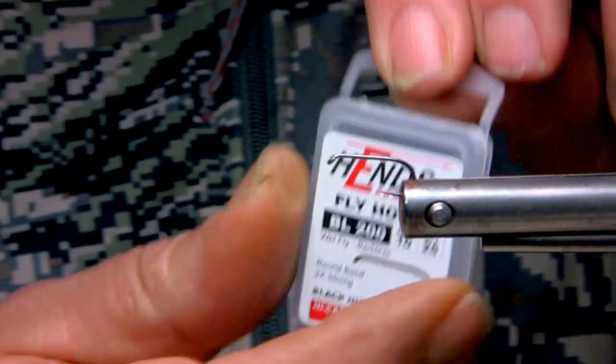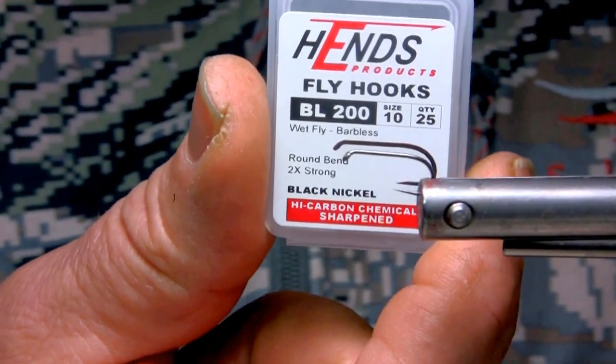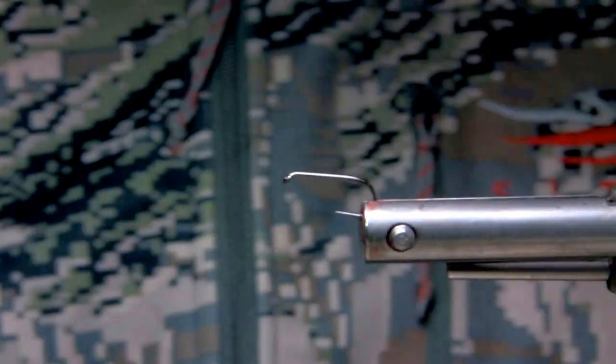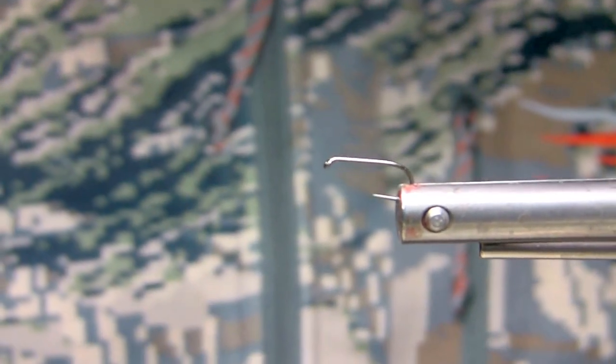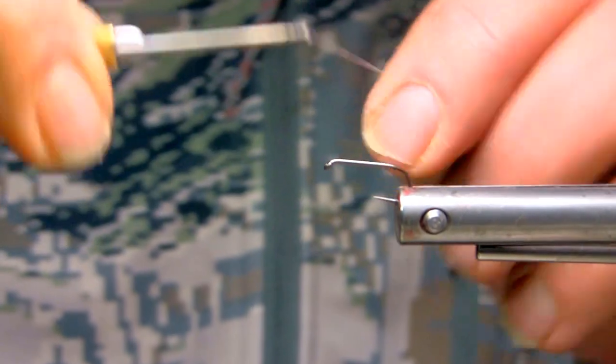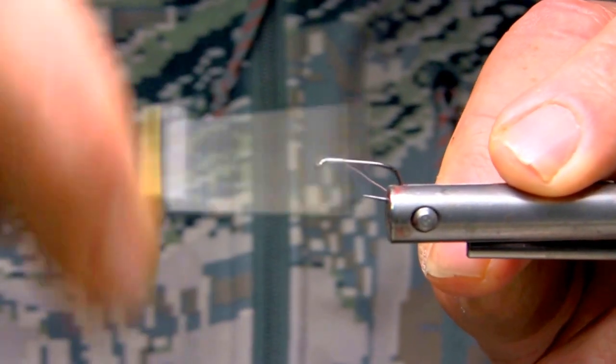I like this hook because it's a 2X strong and back swimmers are often taken very viciously from our experiences both in the spring and in the fall time. So we'll start with just running 12-aught nano silk and just lay down a base layer.